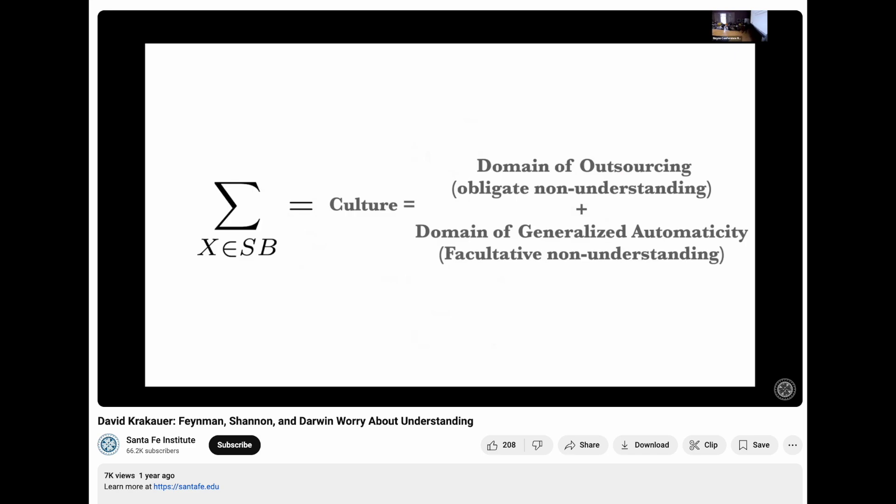But there is this very interesting space that I think John was alluding to, which is I'm going to call the domain of generalized automaticity. And this is this world, right, where you have a Federer who can play beautiful tennis, who's not thinking about it, but who can explain what he did when asked,